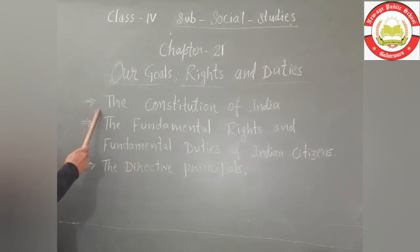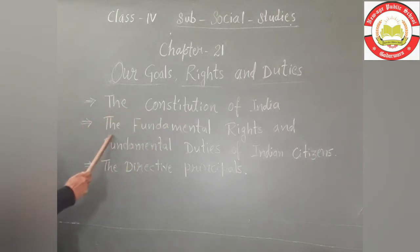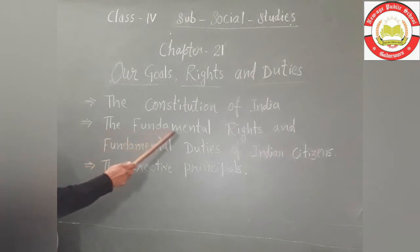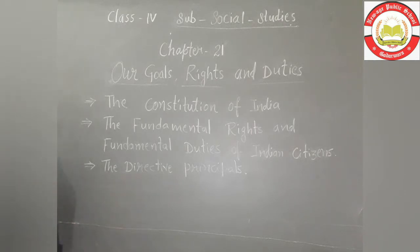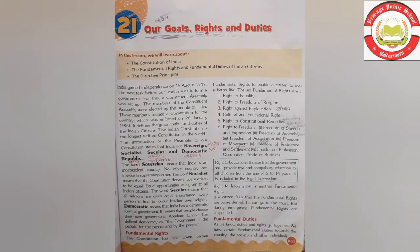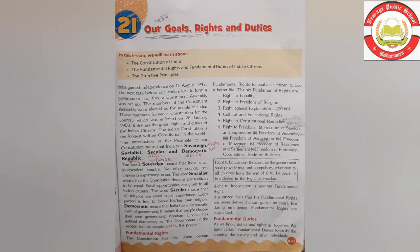The constitution of India covers the fundamental rights and fundamental duties of Indian citizens, and the directive principles. India gained independence on 15th August 1947. India was set up and formed a constitutional assembly.